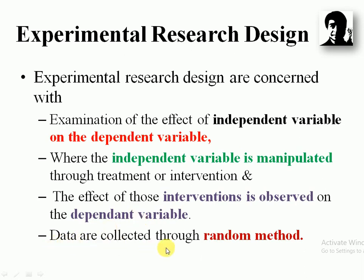In experimental research, we collect data using a random method. Experimental research involves an independent variable and a dependent variable. The researcher and investigator manipulate the independent variable.